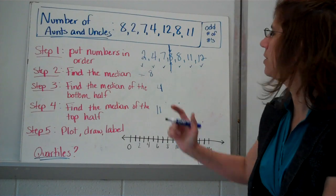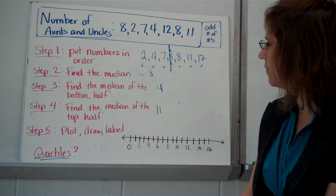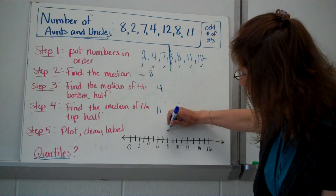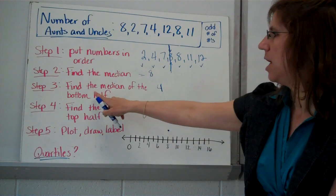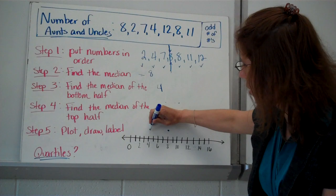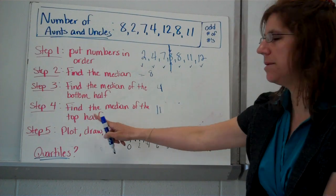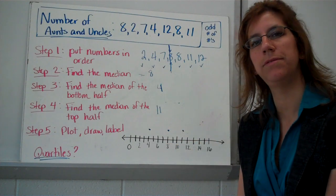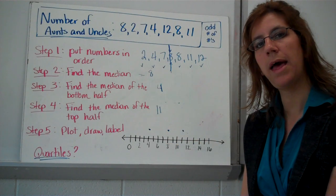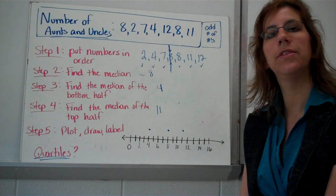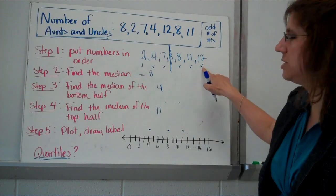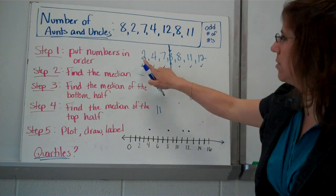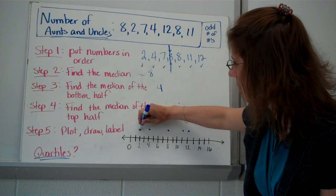And then we're going to graph that, all of these pieces of data. We've got the middle number is an 8. So we're going to graph 8. The median of the bottom half is 4. And the median of the top half is 11. Now, in addition to those three pieces of information, we're also going to add in the largest and the smallest. The largest number in our list is 12. So we're going to put a little dot there. And the smallest number we have is 2. So we're going to put a dot there.